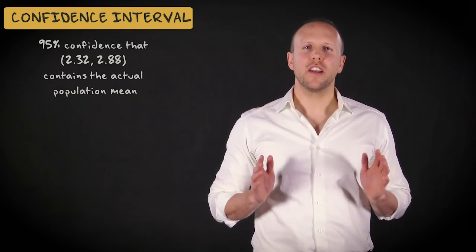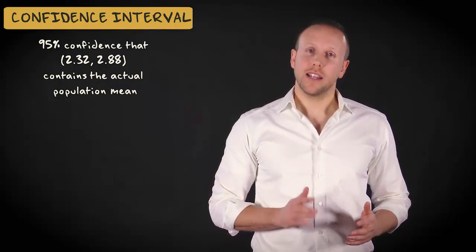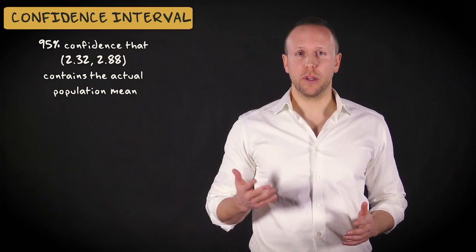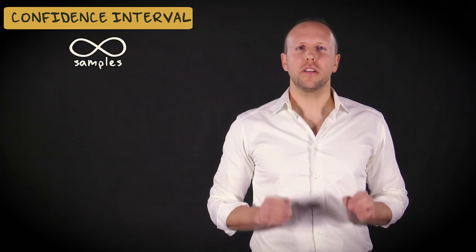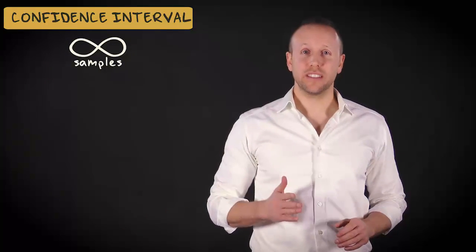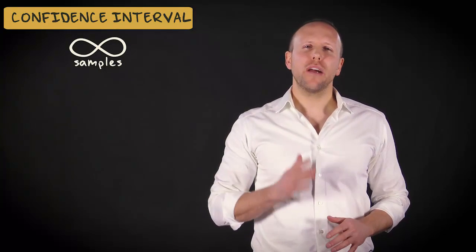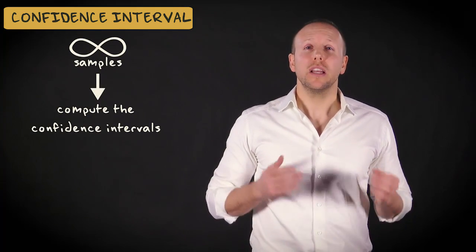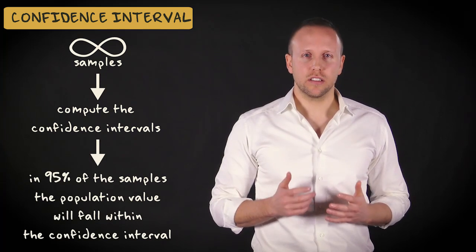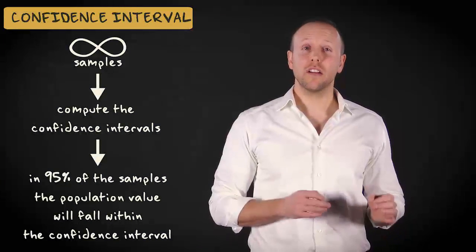We say that we have 95% confidence that this interval contains the actual population mean. More precisely, if we would draw an infinite number of samples with n equals 60 from our population, and for every sample we would compute the confidence intervals with this margin of error, in 95% of the cases the population value would fall within the confidence interval.